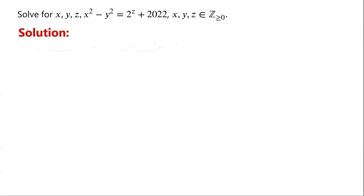The left-hand side of the equation is the difference of two squares, x squared minus y squared, which can be written as a product of two algebraic expressions: x minus y, times x plus y. The right-hand side is 2 to the power of z plus 2022, which is a number for a given value of z. So x minus y and x plus y must be the factors of that number. We now divide the problem into cases based on the values of z.